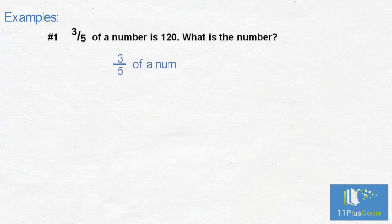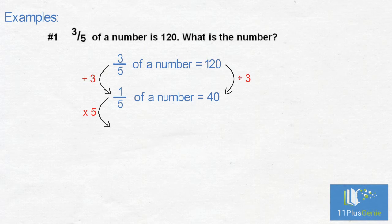Three-fifths of a number equals 120. To find the unit fraction one-fifth, we divide the numerator, which is three. We must divide the 120 also by three, which gives us 40. To find the whole, we times one-fifth by five to get five-fifths, and we times the 40 also by five.